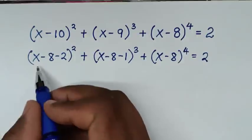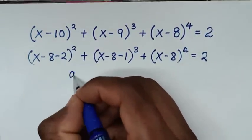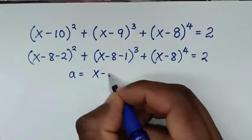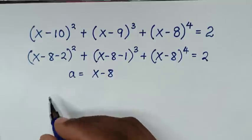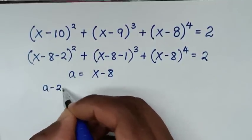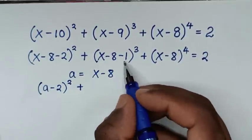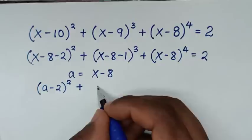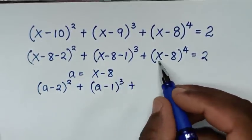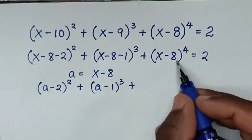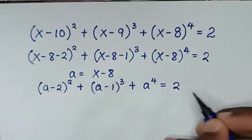In the next step, x minus 8 is common. So we'll let a equal to x minus 8. Our equation will then be (a minus 2) bracket power of 2 plus (a minus 1) bracket power of 3 plus a power of 4 is equal to 2.